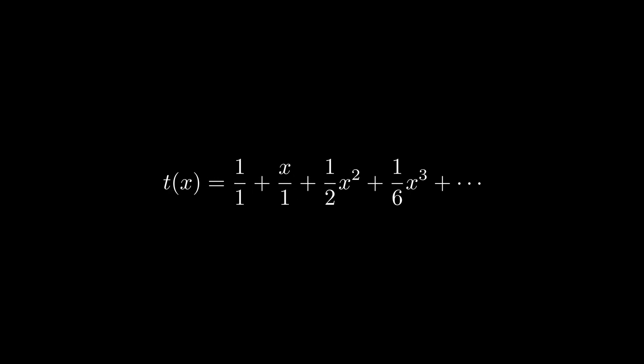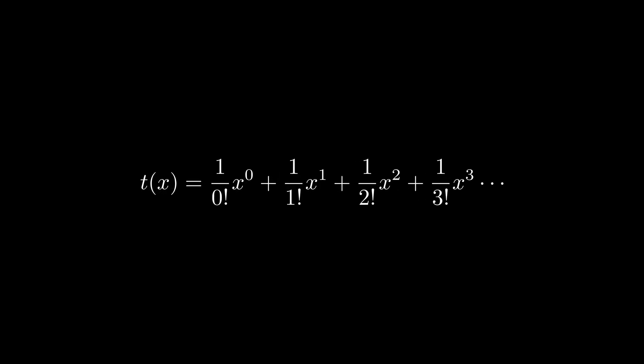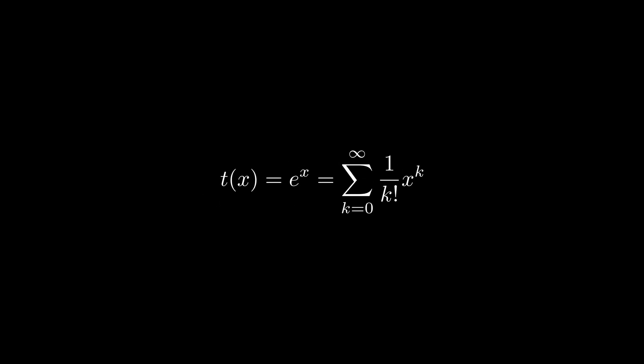Let's pause and try to spot the pattern. The increasing powers are an obvious component, but what about the denominators? Where have we seen this pattern before? The answer is in factorials: x to the power of 0 over 0 factorial, plus x to the power of 1 over 1 factorial, plus x squared over 2 factorial, plus x cubed over 3 factorial. Using this we can generalize a formula — we call this the Taylor series of e to the power of x.